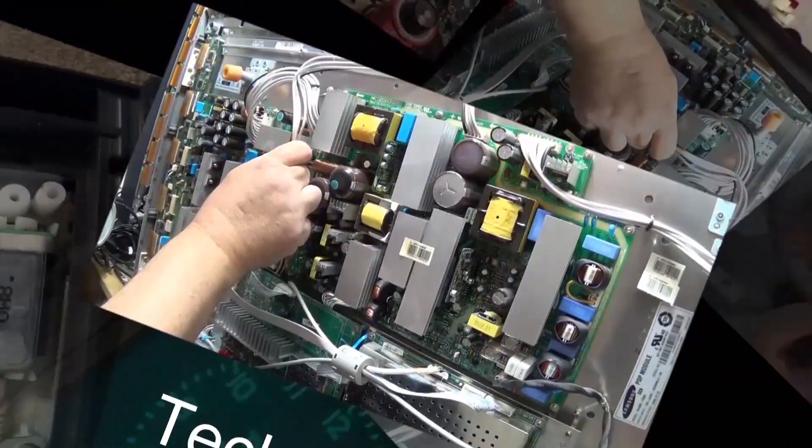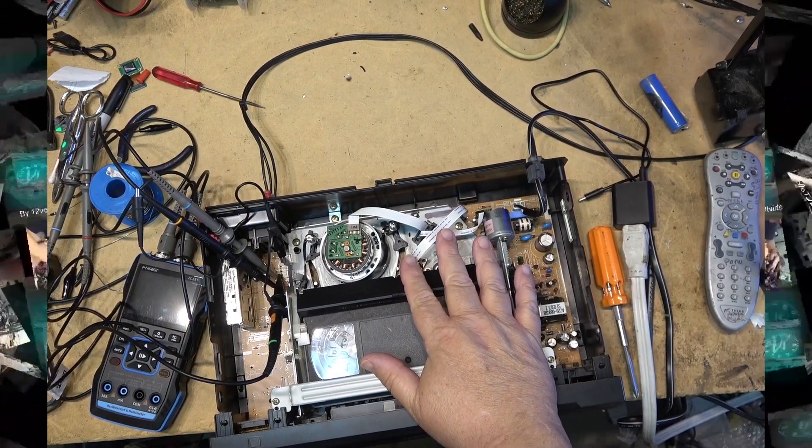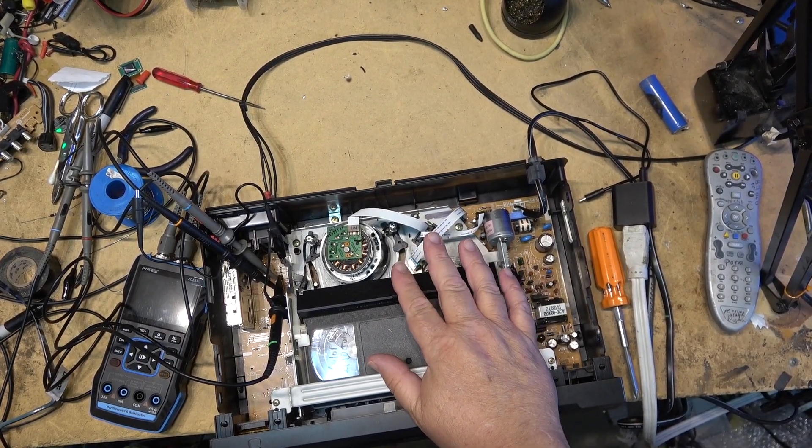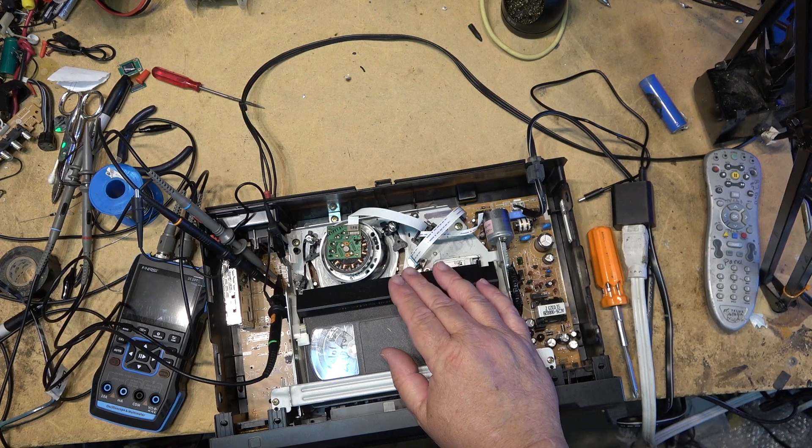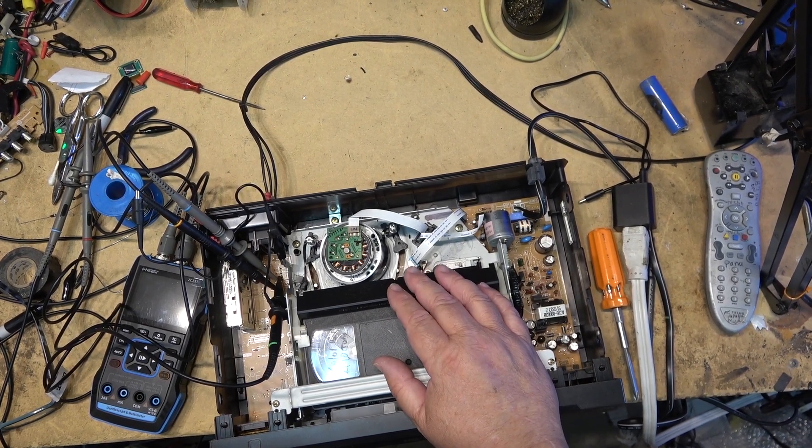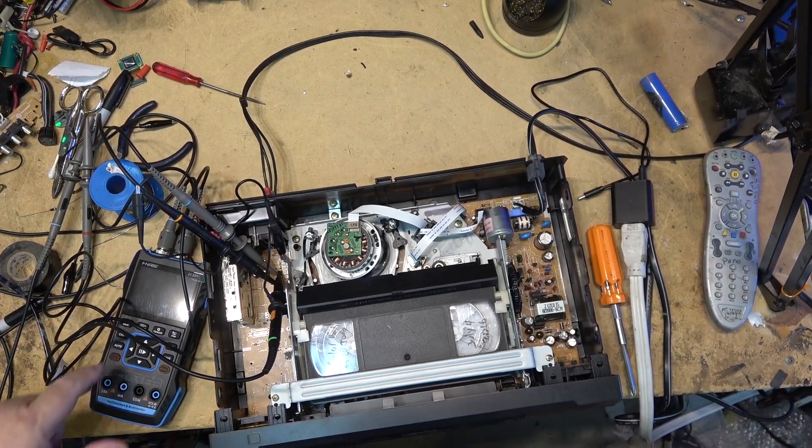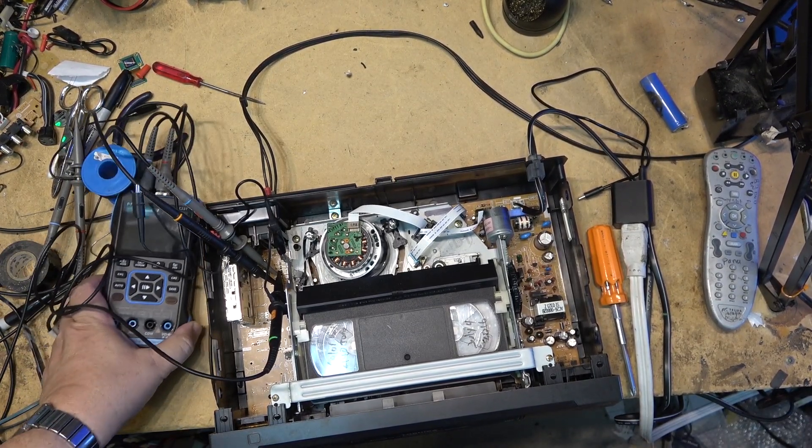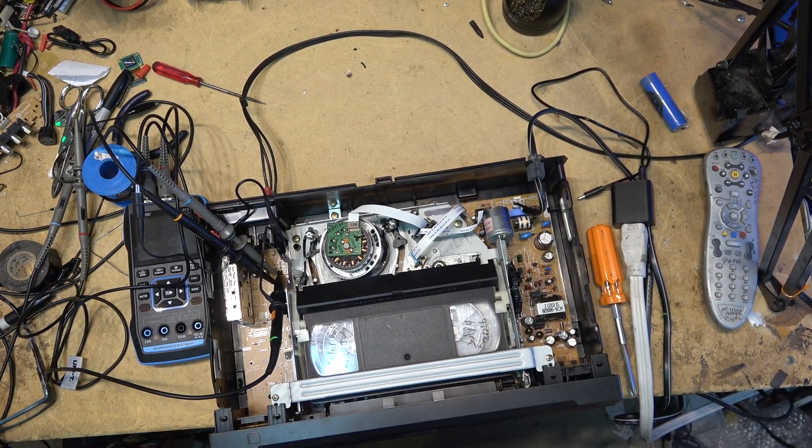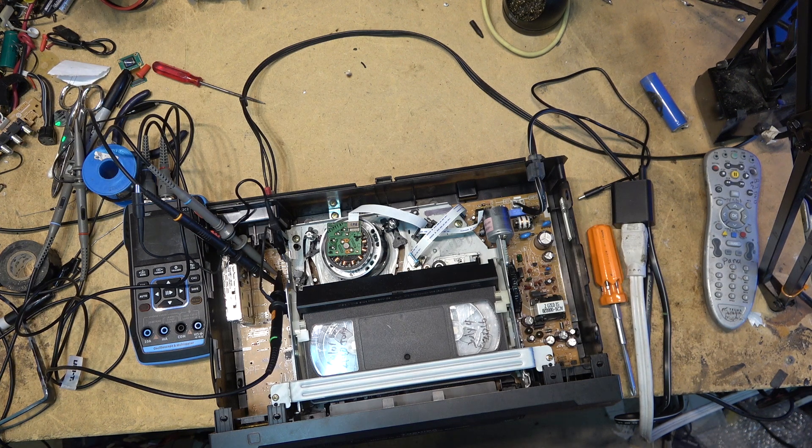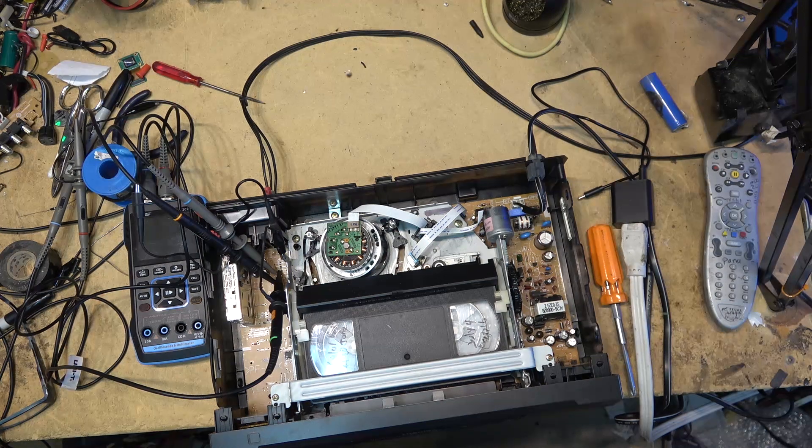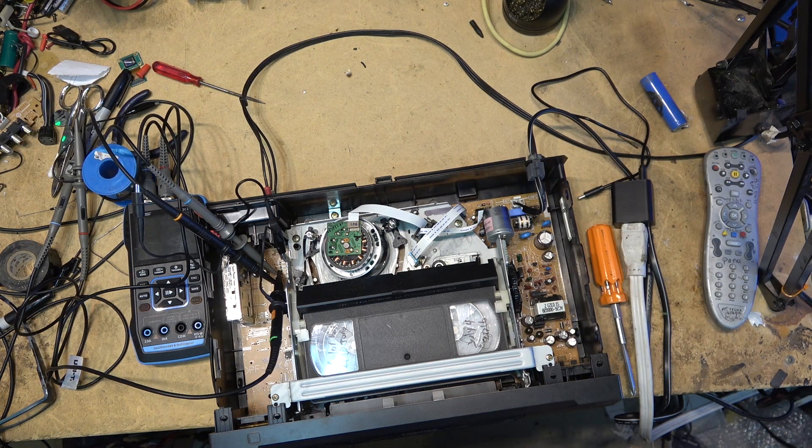I don't know, maybe they'll work, maybe they won't. Let's check it out. We're going to do a tape path alignment on this Toshiba, which is really a Funai deck. I'm going to attempt to do it with both of these cheap scopes. We're going to compare it to analog scope and take a look at the waveforms on analog versus digital.